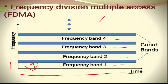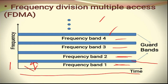In FDMA, every band acts like a channel used only by the user to whom it is provided. The frequency range for a particular channel is limited depending upon the frequency band. In order to avoid crosstalk between adjacent channels, guard bands are used — shown as horizontal lines — to avoid interference between adjacent channels such as frequency band one and frequency band two. These guard bands are basically filters that isolate adjacent channels.